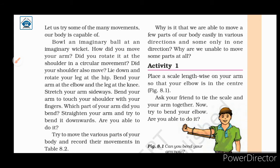Let us try some of the many movements our body is capable of. Bowl an imaginary ball at an imaginary wicket — how did you move your arm? Did you rotate it at the shoulder in a circular movement? In cricket, when we throw the ball at the wicket, we move our shoulder in a circular motion. Did your shoulder also move? Now lie down and rotate your leg at the hip, then bend your arm at the elbow and the leg at the knee.